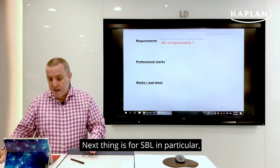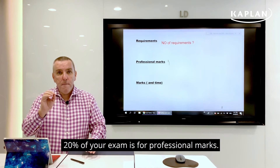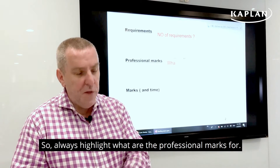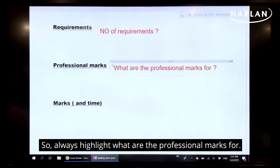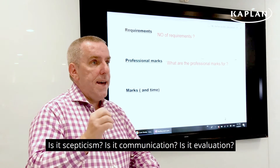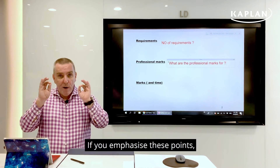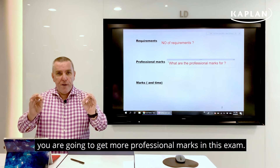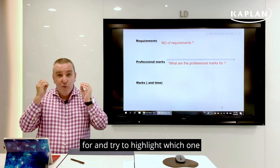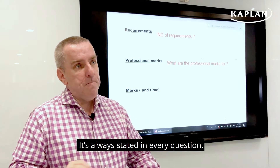Next, specifically for SBL, 20% of your exam is for professional marks. The most important thing when you read the question is to always identify what the professional marks are for. Is it scepticism? Is it communication? Is it evaluation? Each one has a different meaning and a different emphasis. If you emphasize these points you're going to get more professional marks. Learn what the five types of professional marks are and identify which one you're going to use on which question — it's always stated in every question.